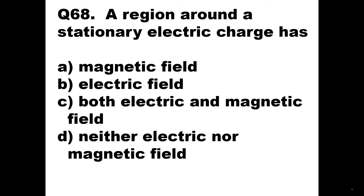Question number 68: A region around a stationary electric charge has which field? Options are magnetic field, electric field, both electric and magnetic field, or neither. A region around a stationary electric charge will have an electric field only. So option B is the right answer: electric field.